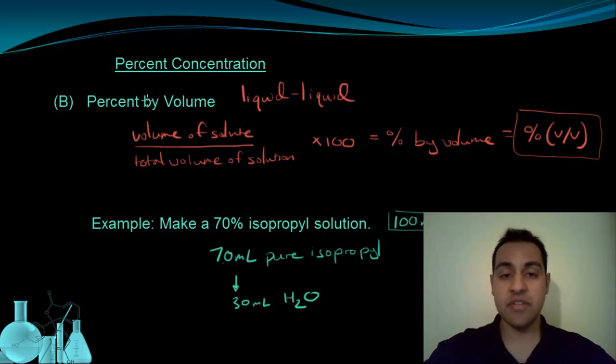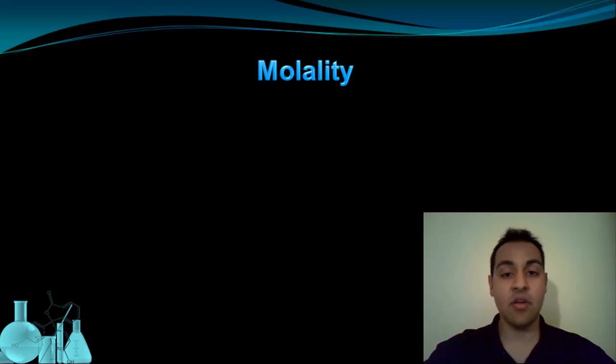So each percent concentration method is useful on its own. Percent by volume is useful for liquid-liquid solutions, and percent by mass is very useful because it doesn't change based on temperature. But there is one more thing we can look at that sort of bridges the gap between molarity's usefulness in stoichiometry and the temperature-independent nature of the percent by mass. So sort of looking at the best of both worlds, we have something called molality.